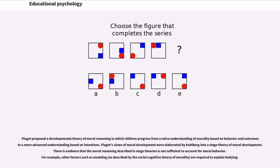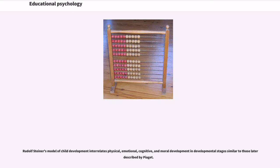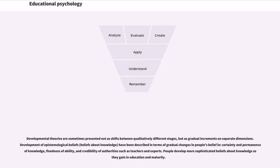There is evidence that the moral reasoning described in stage theories is not sufficient to account for moral behavior; other factors such as modeling, as described by social cognitive theory, are required to explain bullying. Rudolf Steiner's model of child development interrelates physical, emotional, cognitive, and moral development in stages similar to those later described by Piaget. Developmental theories are sometimes presented not as qualitative stage shifts but as gradual increments on separate dimensions. Development of epistemological beliefs — beliefs about knowledge — involves gradual changes in people's belief in the certainty and permanence of knowledge, fixedness of ability, and credibility of authorities such as teachers and experts. People develop more sophisticated beliefs about knowledge as they gain in education and maturity.